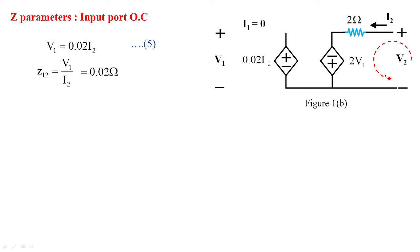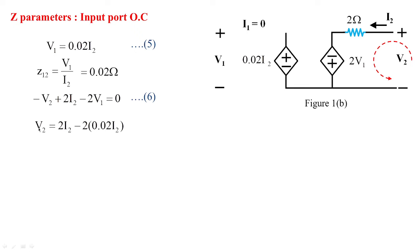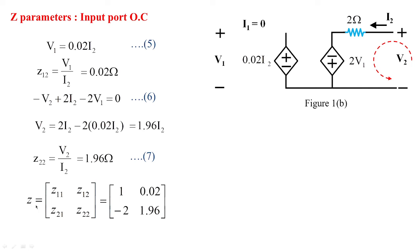Applying KVL in the anti-clockwise direction at the output port gives: minus v2 + 2·i2 minus 2·v1 = 0, which simplifies to 0.96·i2 (equation 6). Substituting equation 5 (v1 = 0.02·i2) into equation 6: v2 = 2·i2 minus 2×0.02·i2 = 1.96·i2. Therefore z22 = v2/i2 = 1.96 ohms (equation 7). The complete z-parameter values are z11=1, z12=0.02, z21=minus 2, z22=1.96.